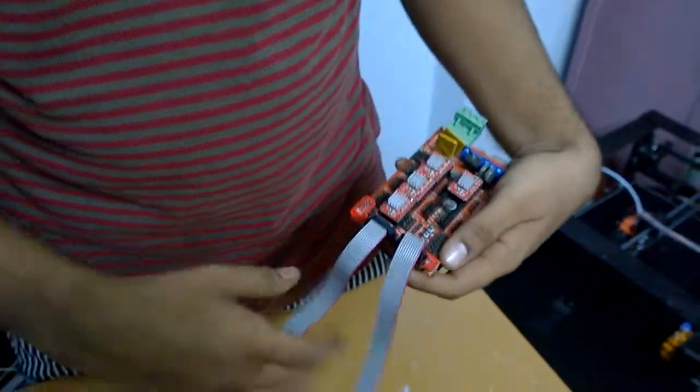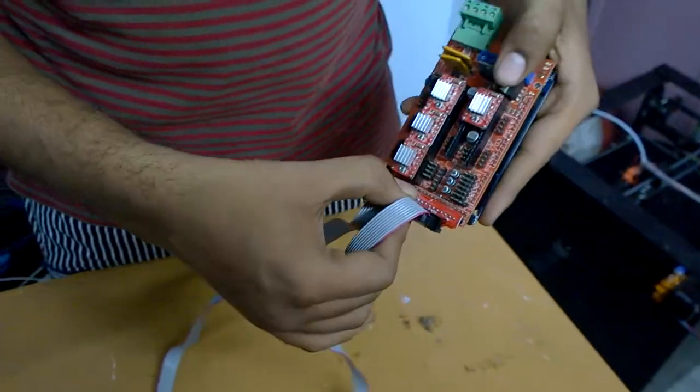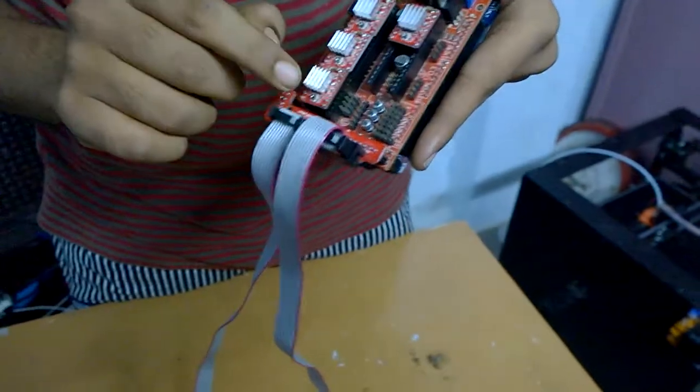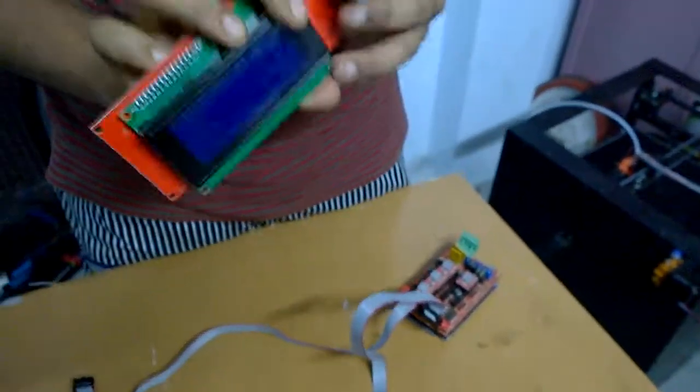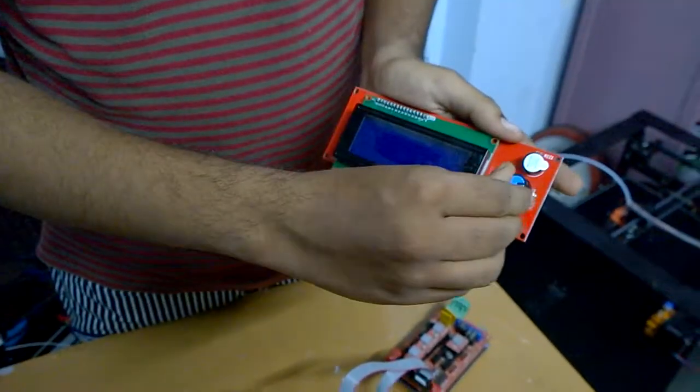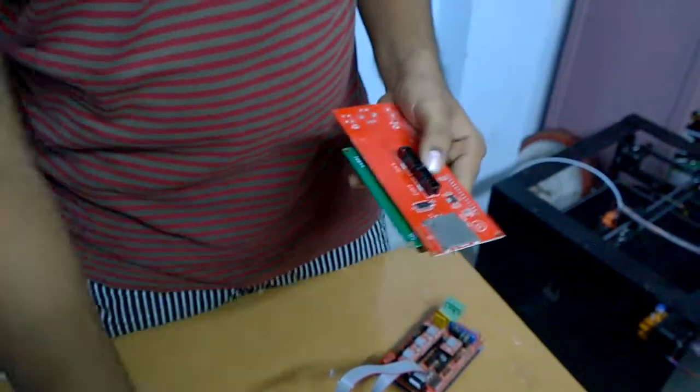Another thing is, this is the wire for LCD display which has EXP1 and EXP2 and this is the LCD display which has controlled knob. So, you want to connect.